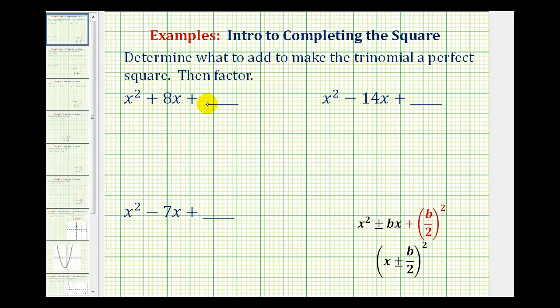Now we'll look at some examples of determining the constant term that must be added to an expression to make the expression a perfect square trinomial, or a trinomial that factors into two equal factors. This is a skill that we'll need in order to solve quadratic equations by a method called completing the square.